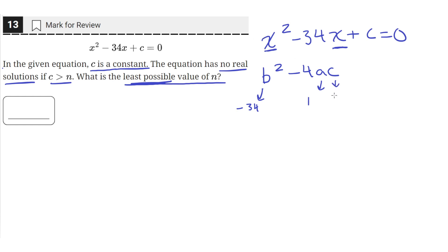And c is just c in this case, because we don't know the value of the constant. So now we can calculate the discriminant. So b squared is 34 squared, or negative 34 squared, minus 4 times 1 times c.